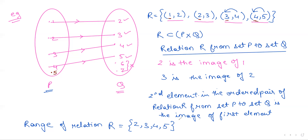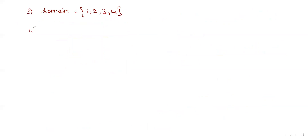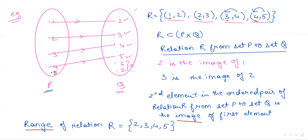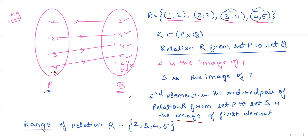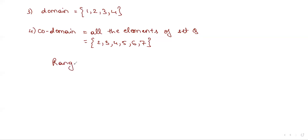So far, you have studied three terminologies: image, range, and domain. The fourth is codomain. Codomain means all the elements of set Q. It does not distinguish whether the elements are part of your ordered pairs or not — all elements from 2 to 7 will be considered elements of the codomain. Your range is always a subset of the codomain.